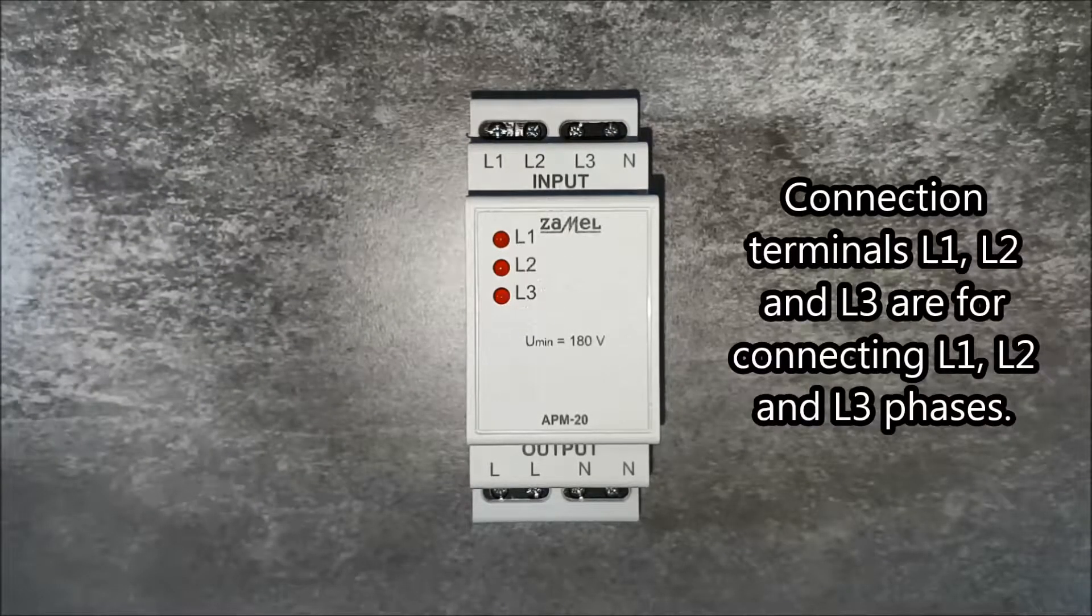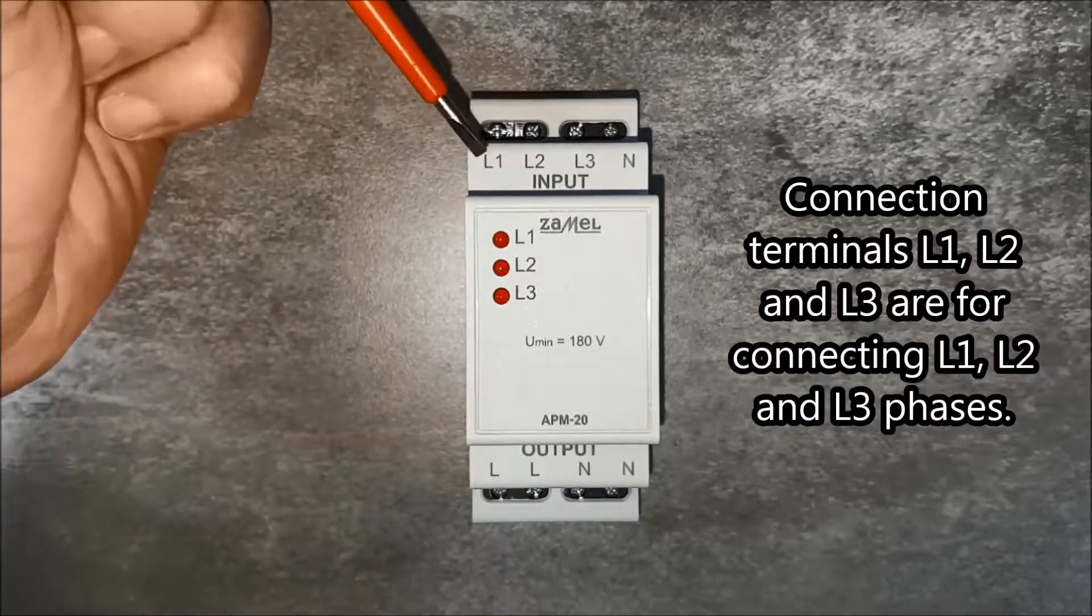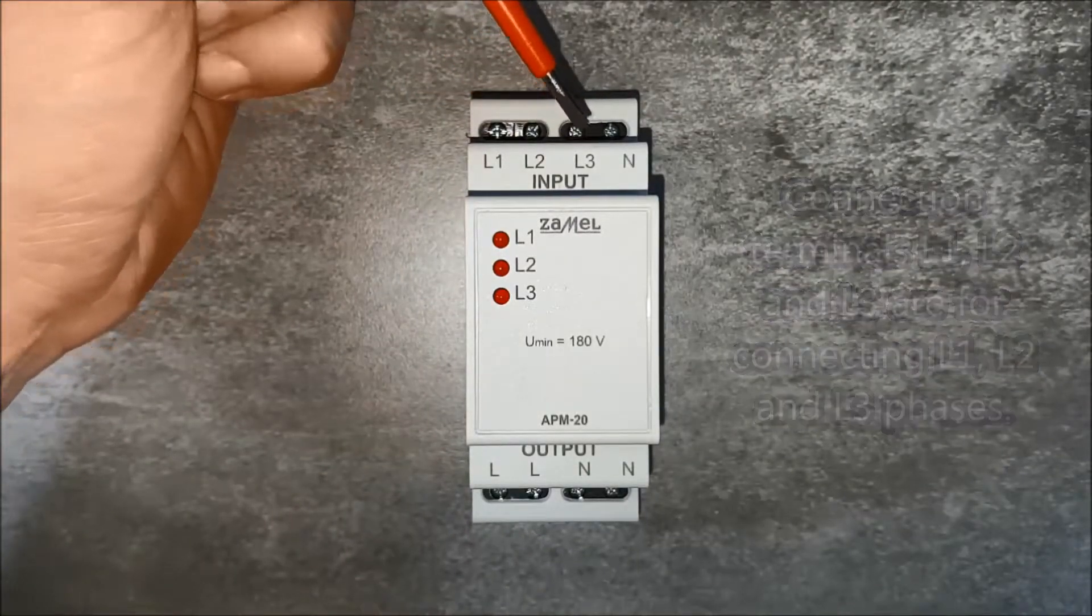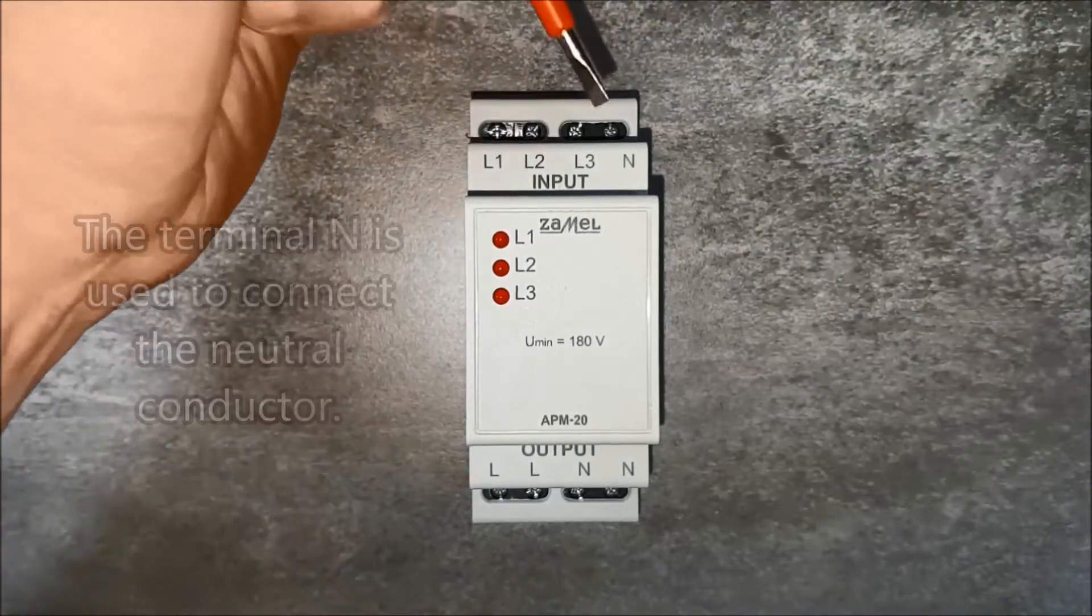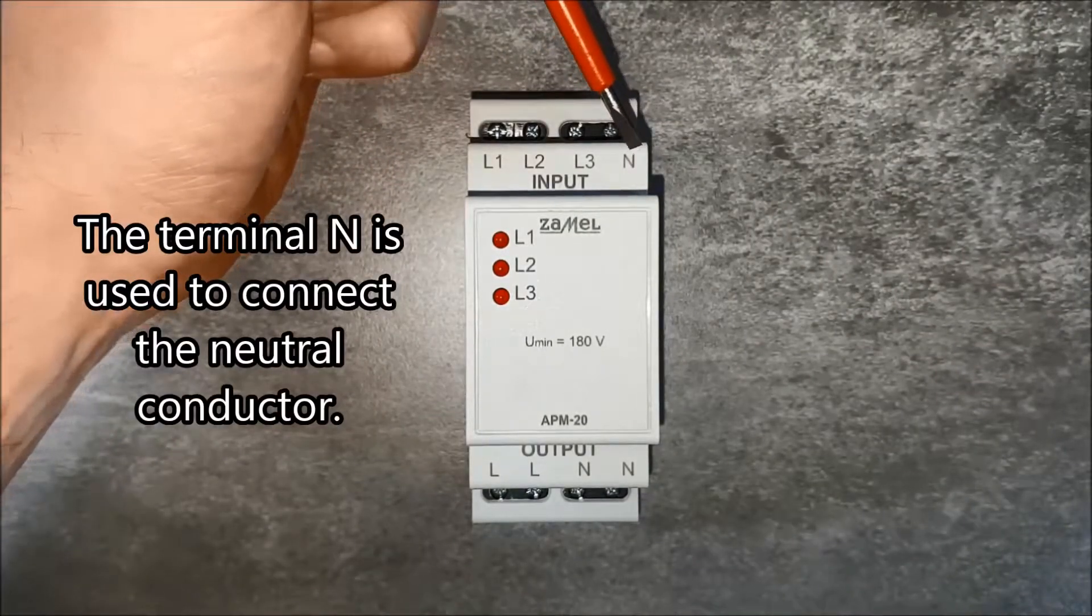Connection terminals L1, L2 and L3 are for connecting L1, L2 and L3 phases. The terminal N is used to connect the neutral conductor.